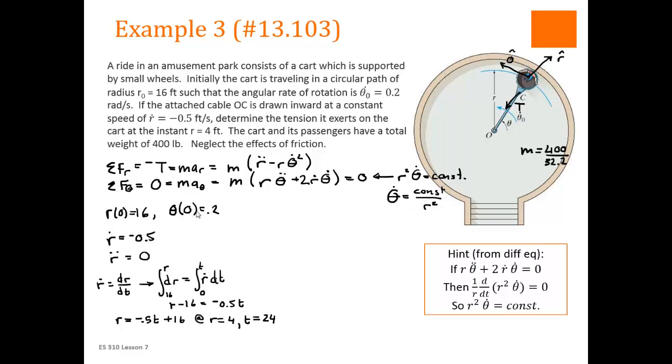At the initial condition, theta dot is equal to 0.2. And we have r is equal to 16, so we can solve for the constant. So 0.2, let's go back up to this form of it. R was 16 squared times 0.2 is equal to the constant. So the constant is equal to 51.2.